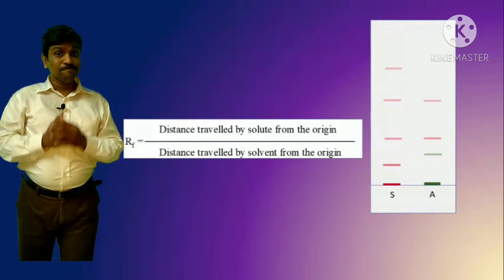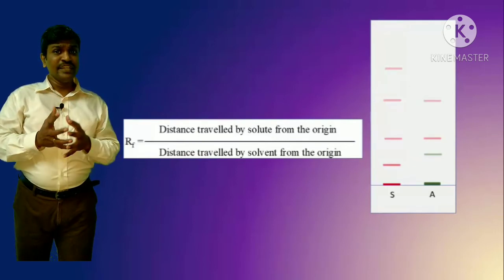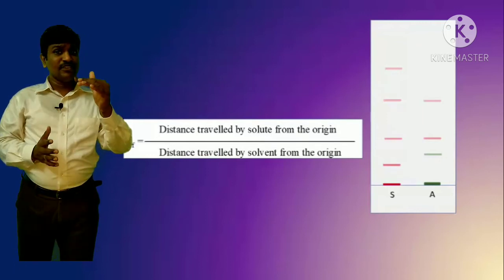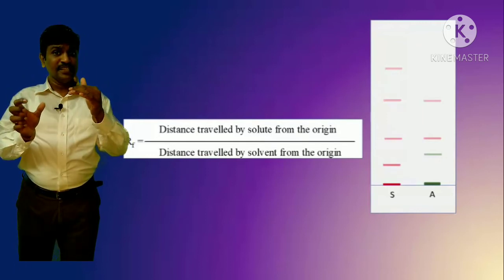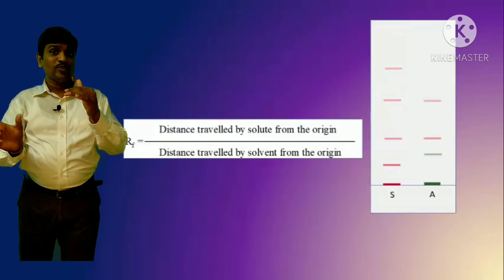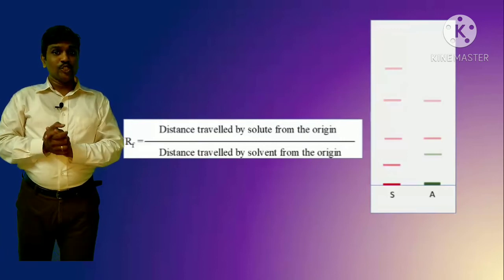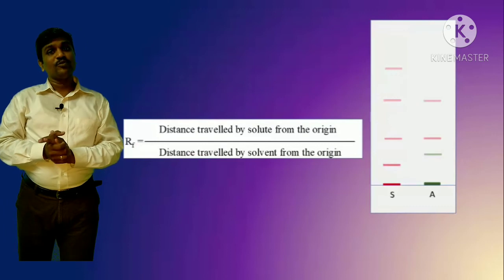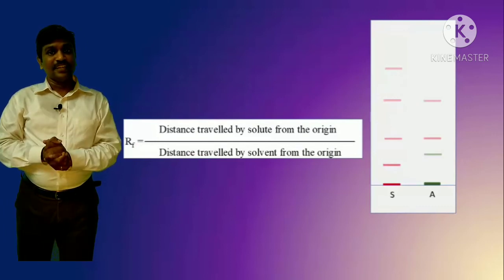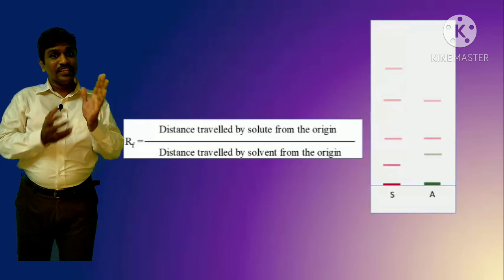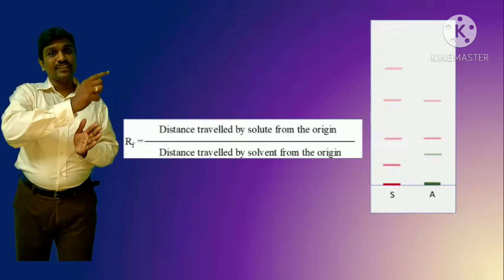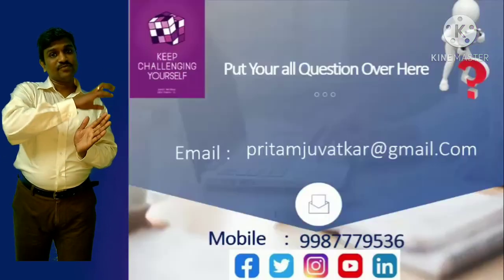The RF value is the distance traveled by the solute from the baseline divided by the distance traveled by the solvent from the baseline — that is very important. Likewise, you have to perform your TLC. If your sample contains the constituent, the same mark will appear in both S (standard) and A (sample).